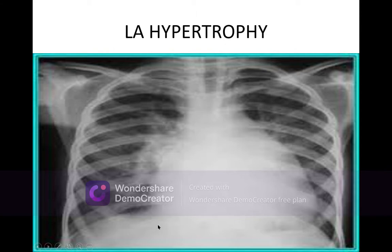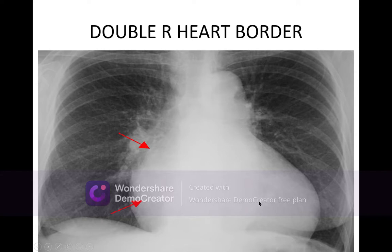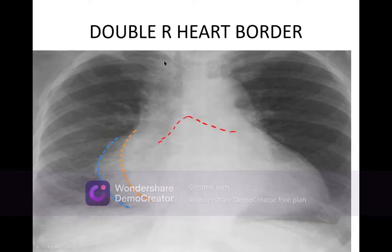In mitral stenosis, the left atrium enlarges gradually and moves backwards, making a false border on the right side — this is called the double right heart border. One curve is the right atrial border and the second curve is the enlarged left atrium, which can become equivalent in size to the left ventricular cavity. This is called doubling of the right heart border, a sign of severe mitral stenosis with regurgitation.